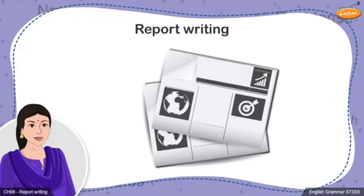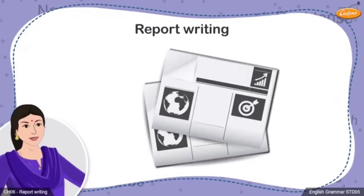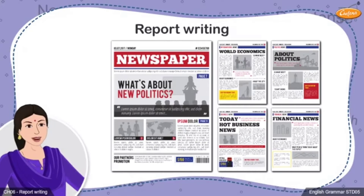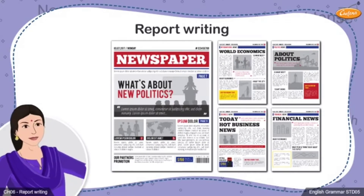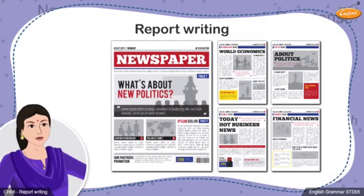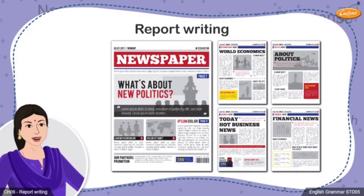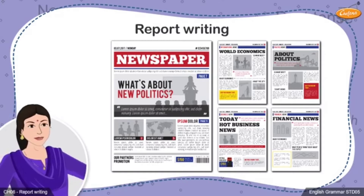You would have noticed tiny columns filled with information about different issues when you flip through the pages of your daily newspaper. Some of these columns give information about the news of the day which could be related to politics, social activities, entertainment or even sports. All these pieces of information are based on the events that have taken place in reality, therefore they are based on fact. Such clear, lucid and concise pieces of information based on real happenings are called reports.